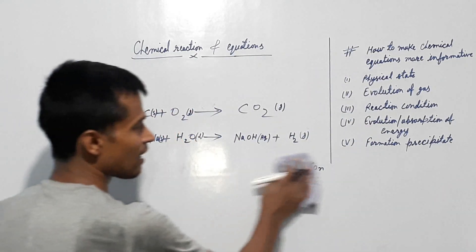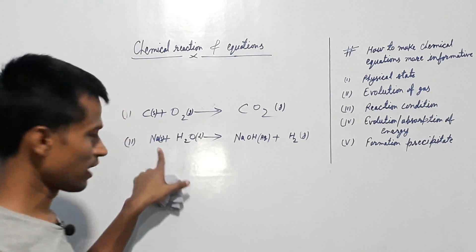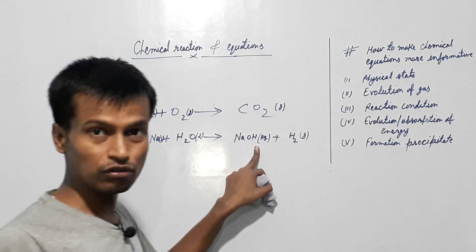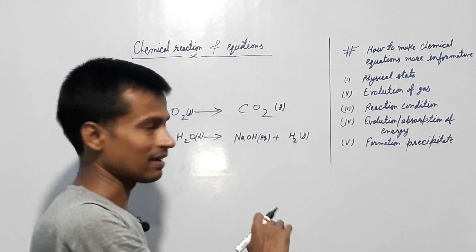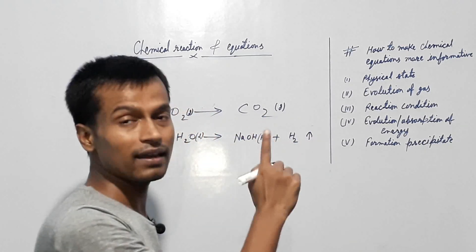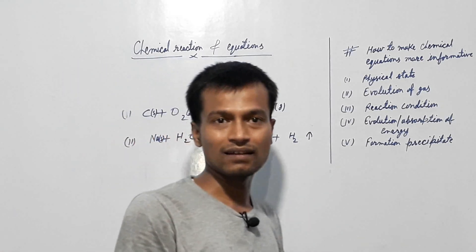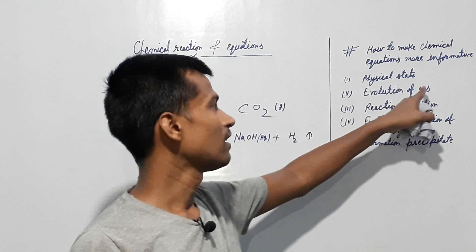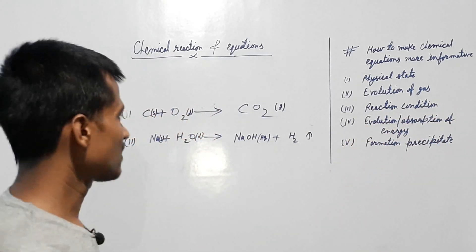Next topic is the evolution of gas. In the second reaction we wrote — sodium was solid, water was liquid, and sodium hydroxide formed is an aqueous solution, while hydrogen is a gas. If you write G beside it, you know it is gas. Otherwise, we use an arrow pointing upward to indicate evolution of gas — meaning gas was released during this chemical reaction.